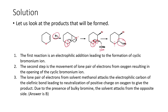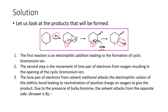We end up with a product where the methoxy group is introduced in close proximity to the oxygen unit. The answer is B because bromine is a bulky group, so the methoxy group cannot attack from the same side — steric repulsion would be very large. It is again anti-addition (trans addition): bromine points upward and the methoxy group attacks from the bottom, minimizing steric repulsion.